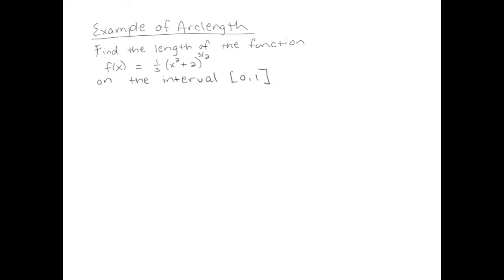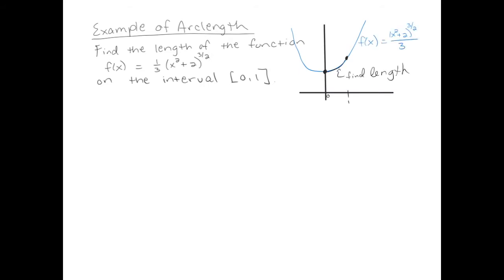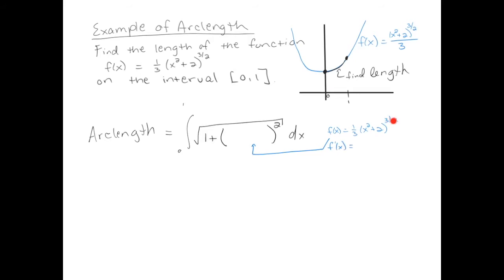Here's an example. We're going to find the length of this particular function between x equals zero and x equals one. The graph looks something like that, and we're going to find the length from x equals zero to x equals one. The beginning of this problem is straightforward: you just apply the formula. So the arc length is the integral from zero to one of the square root of one plus f prime squared with respect to x. We need to figure out what f prime is. Using the chain rule, reducing the power by one gives us a half, then multiplying by the derivative of the inside function — the two cancels with the two — and our f prime function is x times (x squared plus two) to the one-half power.